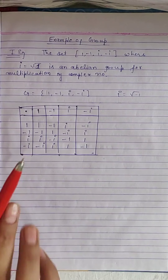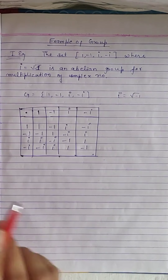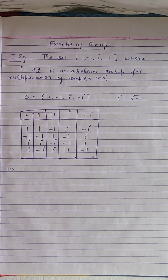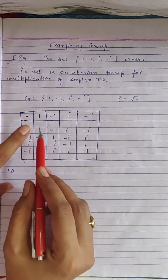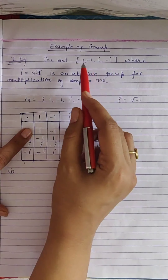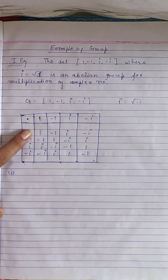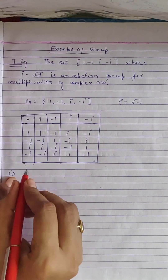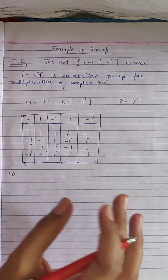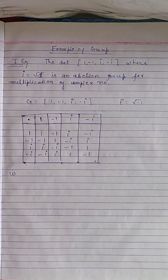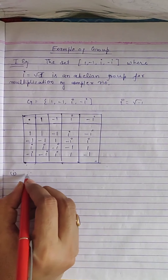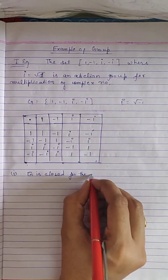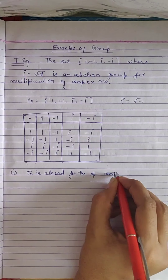This is the Cayley table. Now listen carefully. From this table, the first property — closure — can easily be seen: all the entries of this table must belong to this group, with no value falling outside of this set. That shows this operation is closed for this set. All the elements of G appear in the table, which shows that multiplication of complex numbers induces a binary operation on G. This implies G is closed under complex multiplication.